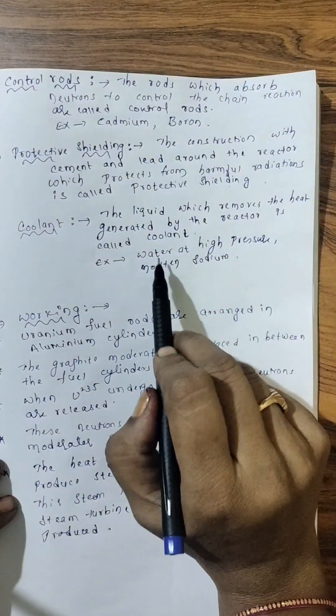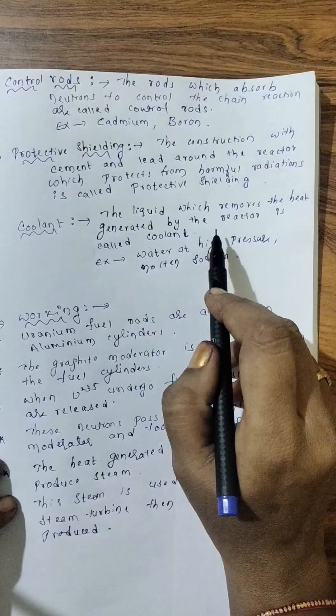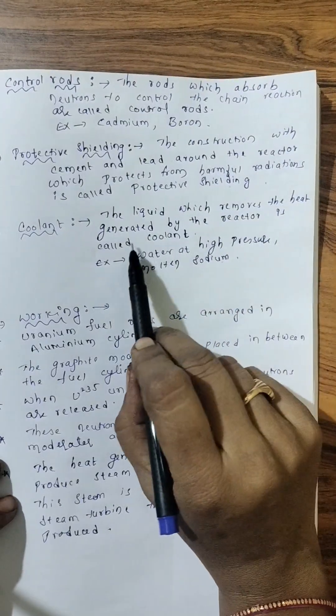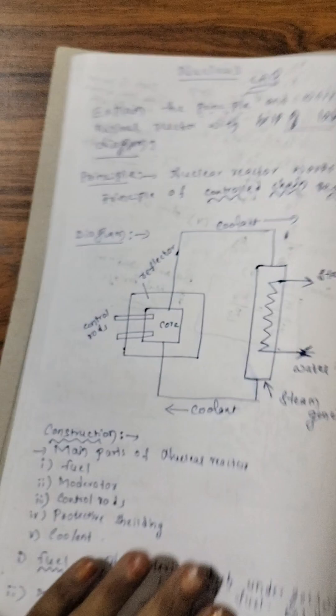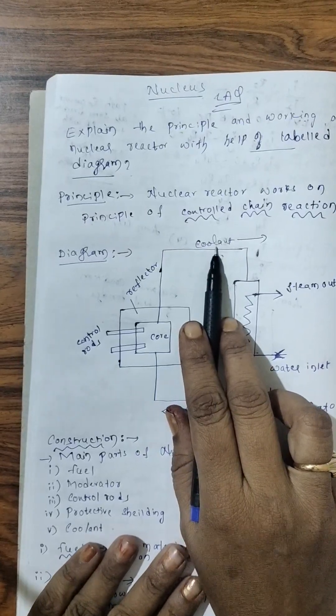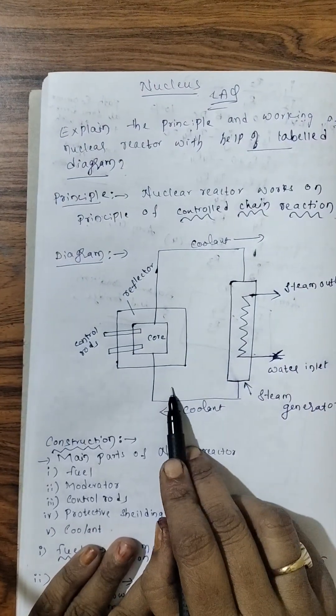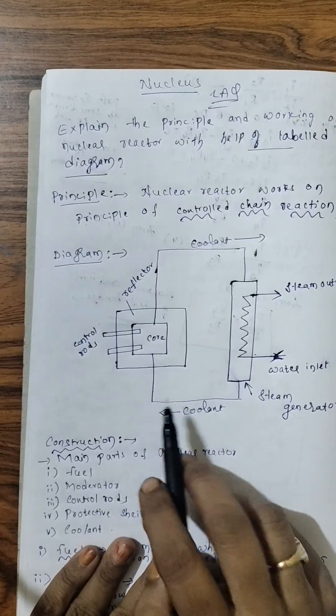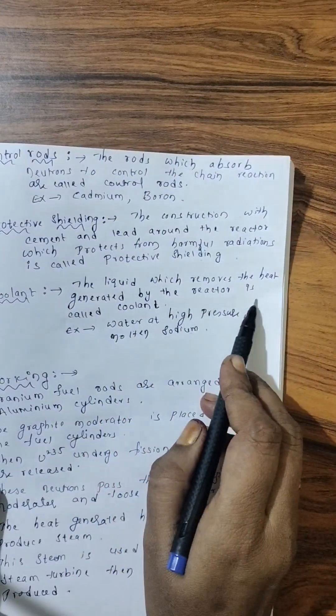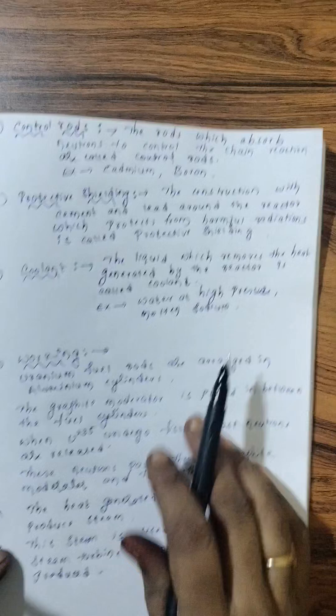That heat is absorbed by this water at high pressure or we use molten sodium also. And water gets heated up. And that we call it as steam. That steam is removed by this continuous circulation of coolant. Here, when heat is absorbed by that particular water at high pressure, it converts into steam and that steam is sent out. And again, through water inlet, again the water or molten sodium is sent into the reactor. The process continues. So now here, the liquid which removes the heat generated by the reactor is called coolant. As coolant, we use water at high pressure and molten sodium. So this is about construction.